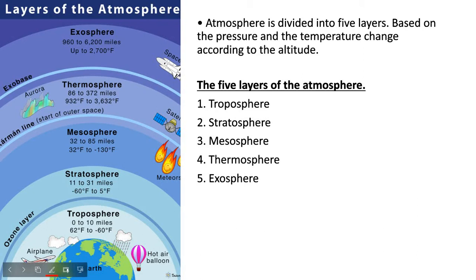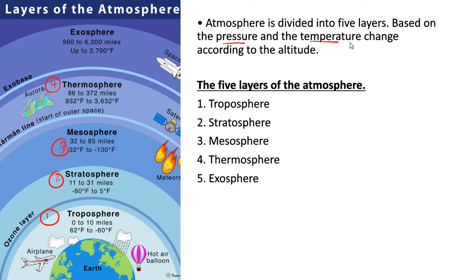Now, keeping those terms in mind, let us move on. The atmosphere can be divided into five layers. The first layer is called the troposphere, the second is the stratosphere, the third is the mesosphere, the fourth is the thermosphere, and the fifth is the exosphere. We are going to study each one of these in a little more depth.